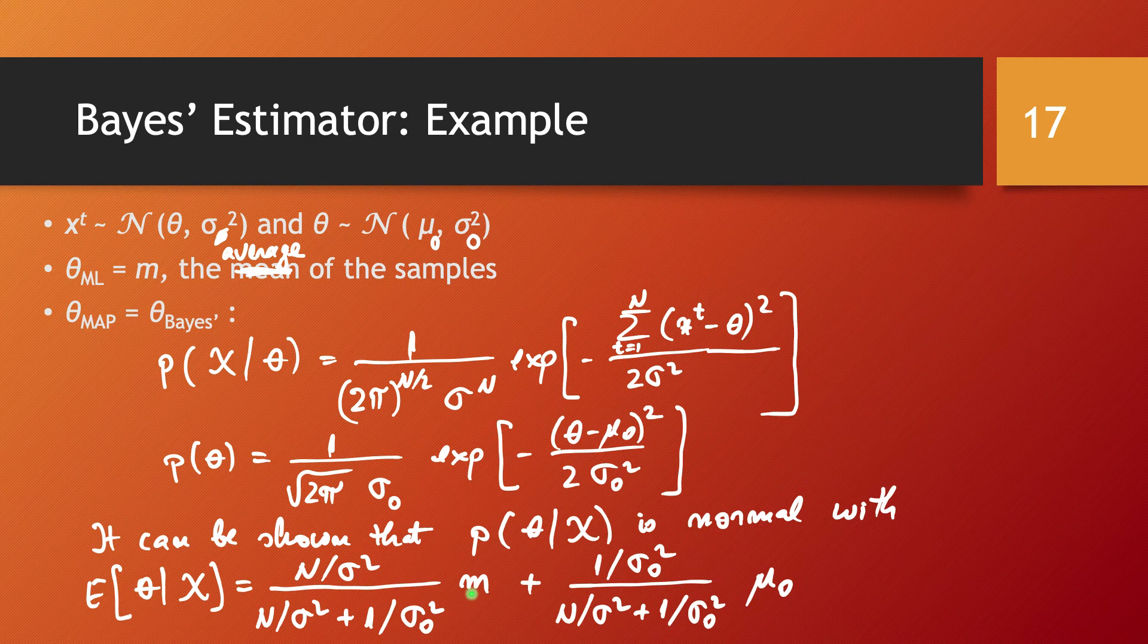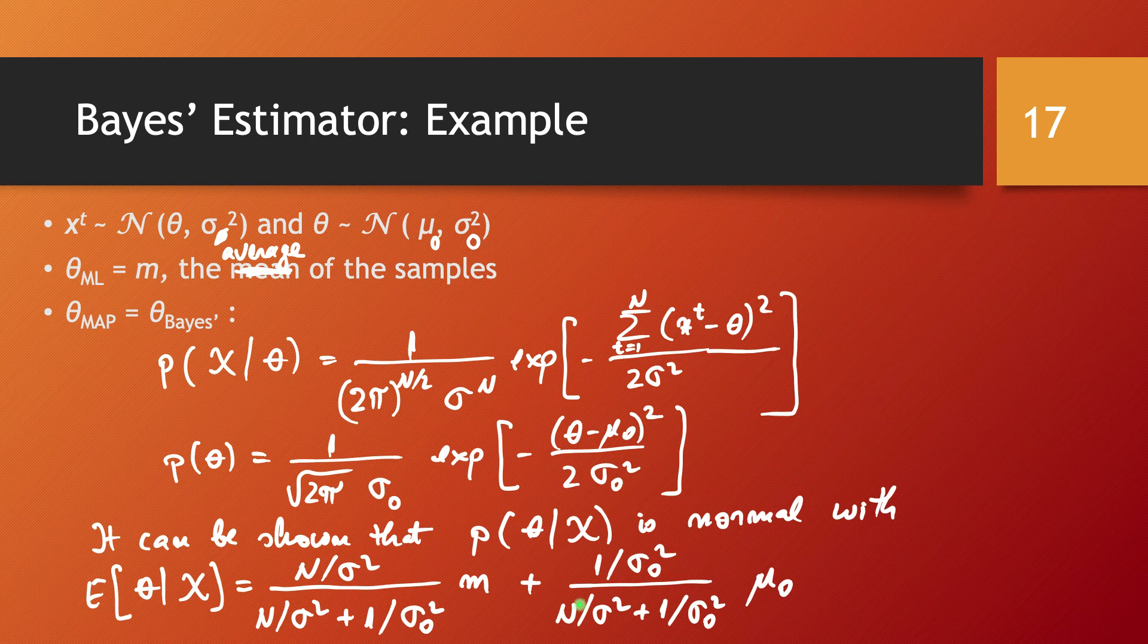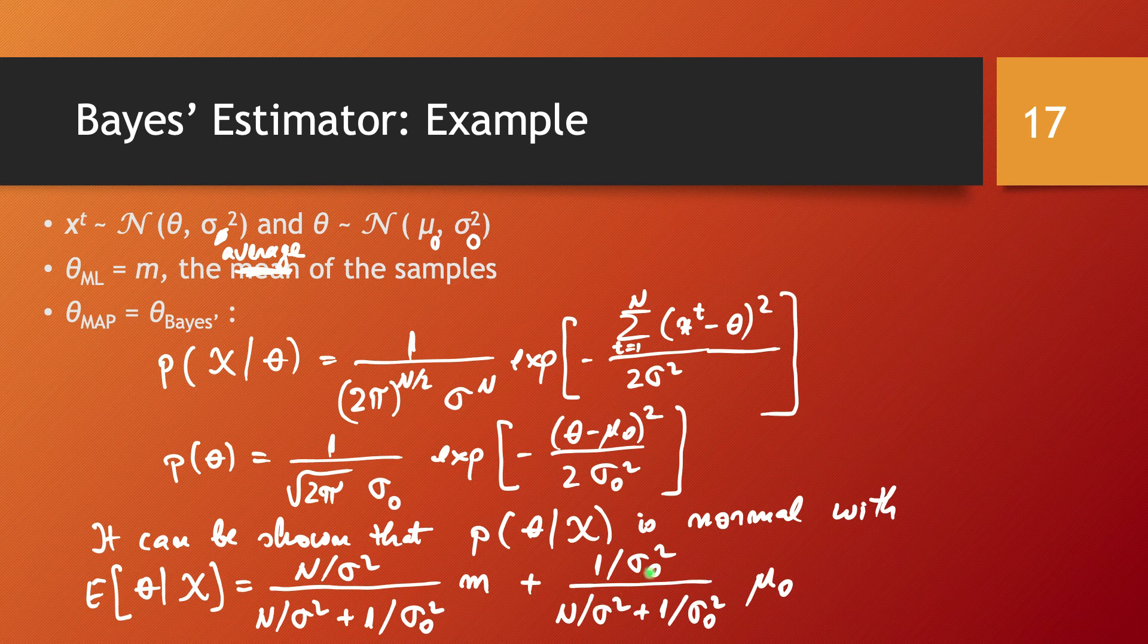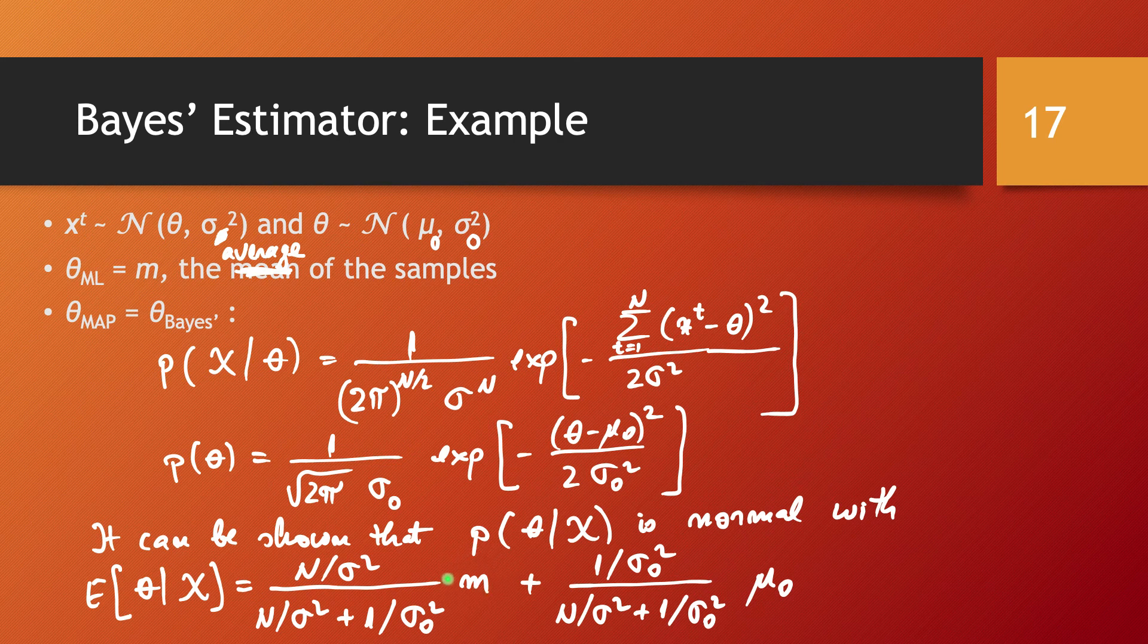And one thing that I would like you to observe is that as we have a larger size sample, so a larger n, the Bayes estimator is going to get closer and closer to the sample average, because this one is going to vanish, this one is going to become 0, and this one is going to approach 1. So as we have more samples in our training set, we will get that the Bayes estimator gets closer and closer to the average of the samples.